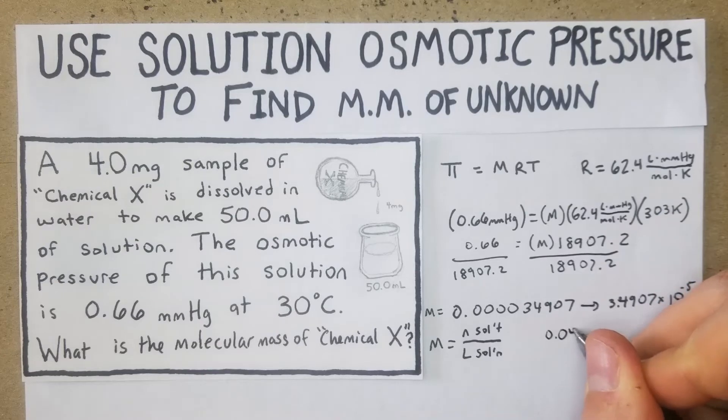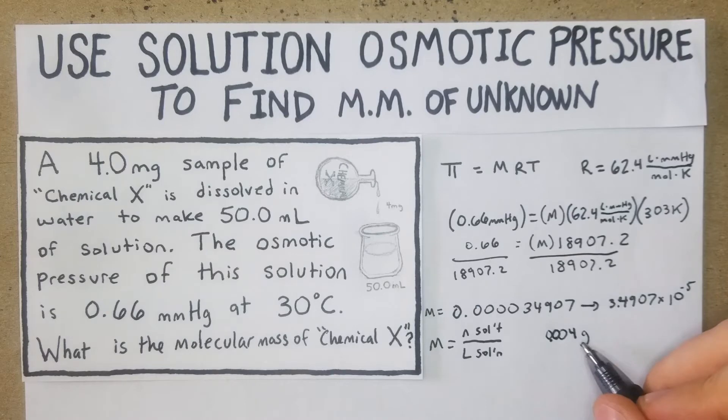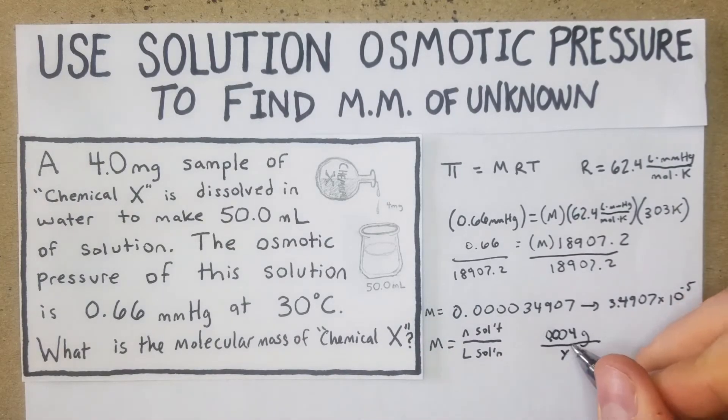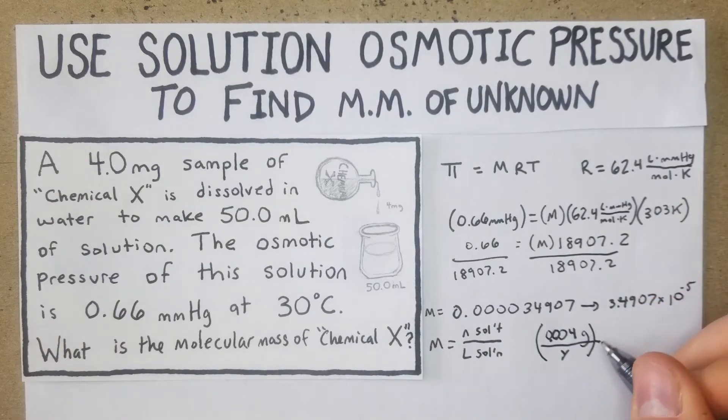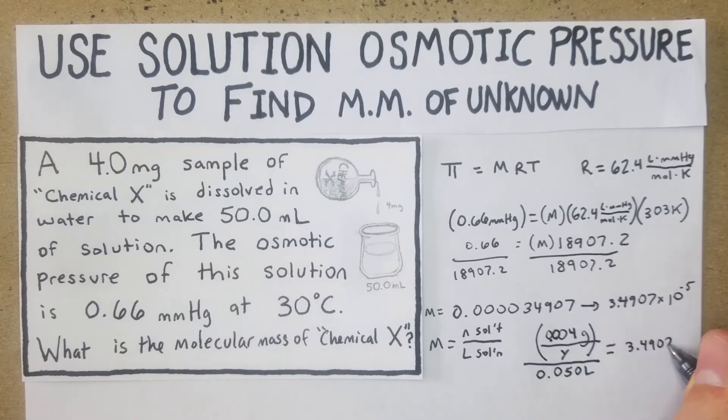We can take our moles of solute and figure that out. First off we have 0.004 grams - because these millimeters move it three to the left to get it into grams - that's going to be over y, and this is all over 0.05 liters. Now we have some of the elements that we need and then we just need to move forward with solving this.